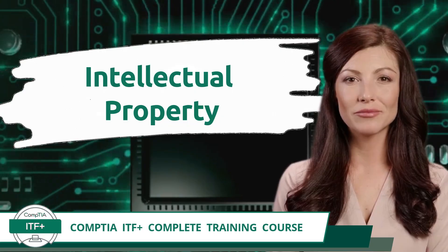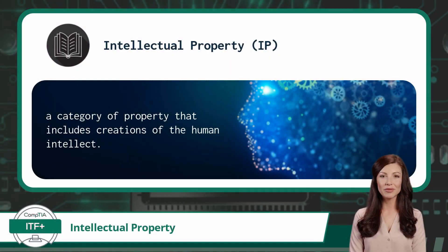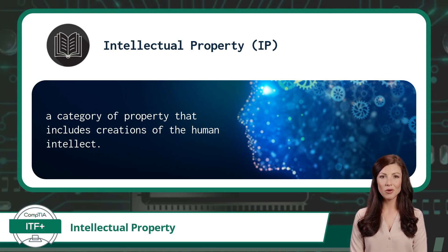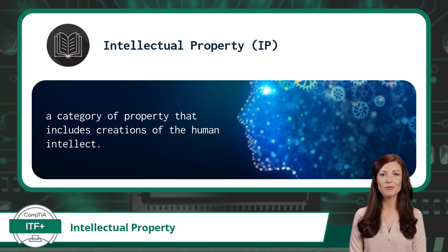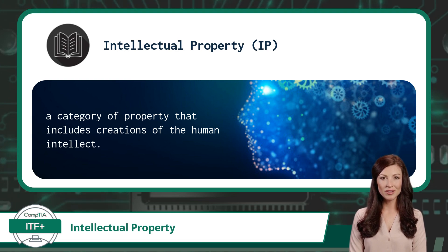Intellectual property is a category of property that includes creations of the human intellect. There are many types of intellectual property, but for the CompTIA ITF Plus certification exam, we will be focusing on trademarks, copyrights, and patents. We will discuss their definitions and how each might be applied.